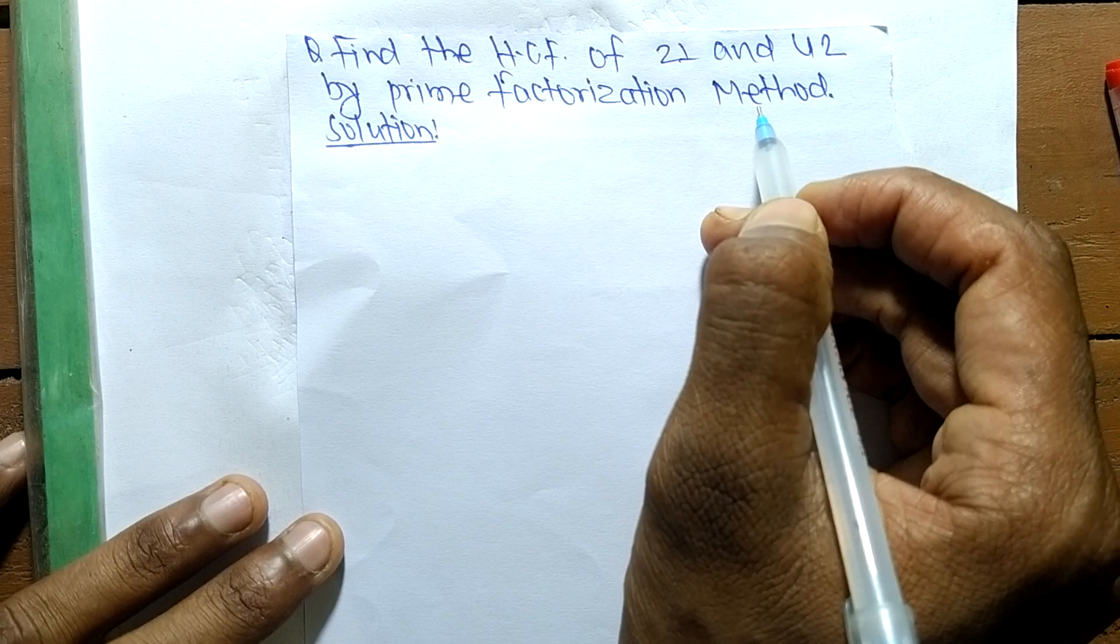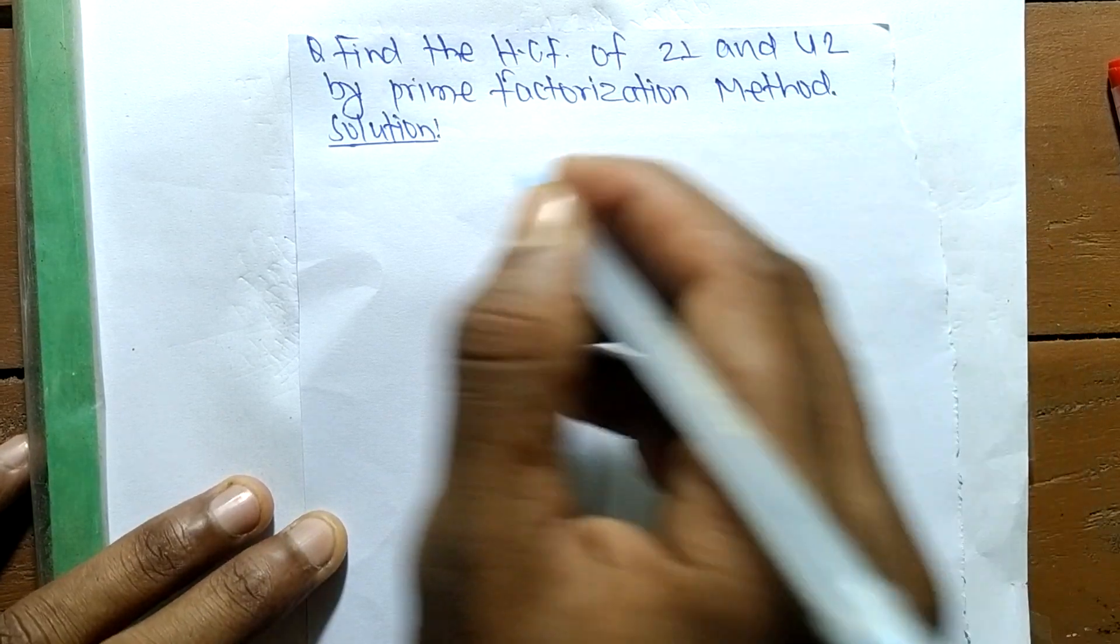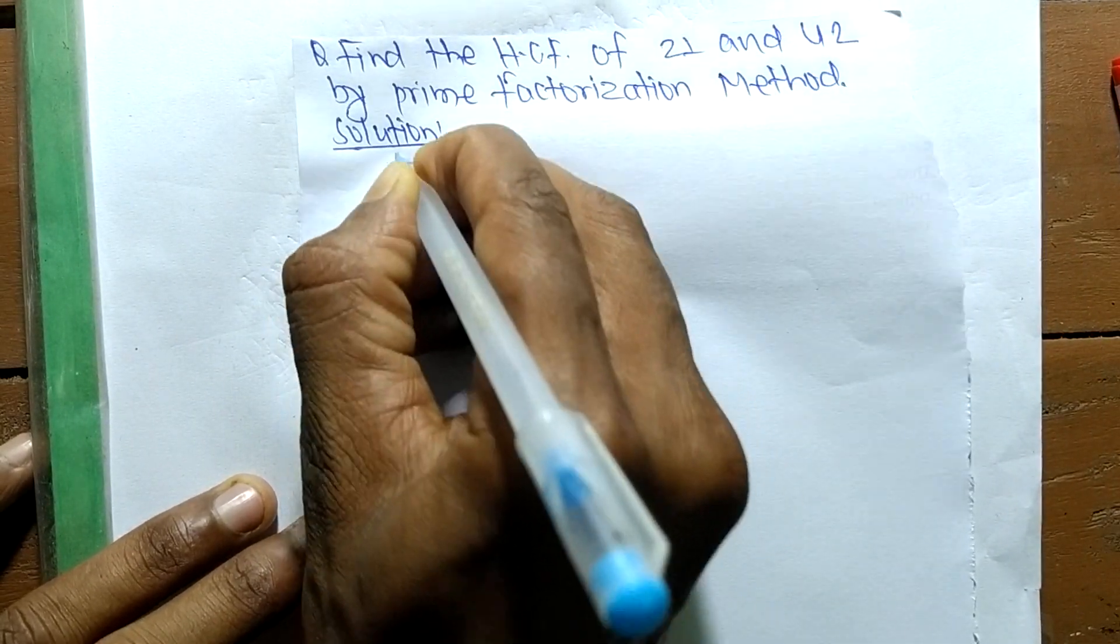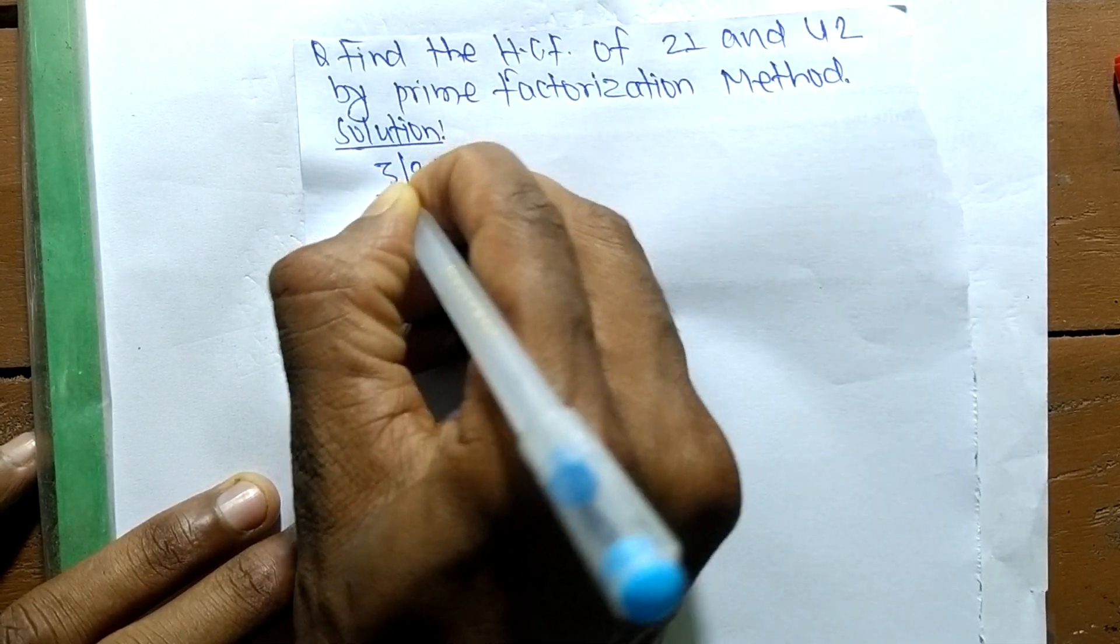In this method, first we find out the prime factors of 21. So it is 3 times 7.